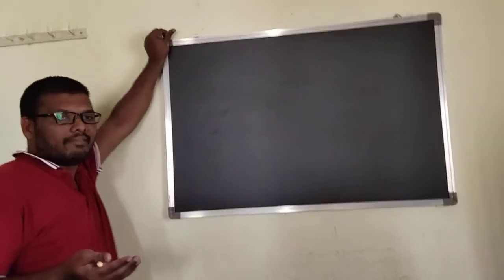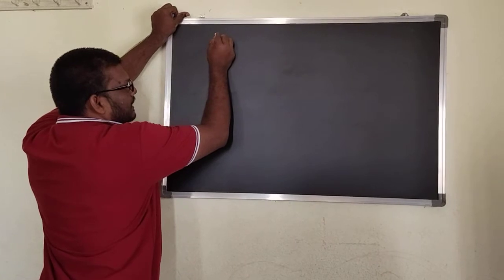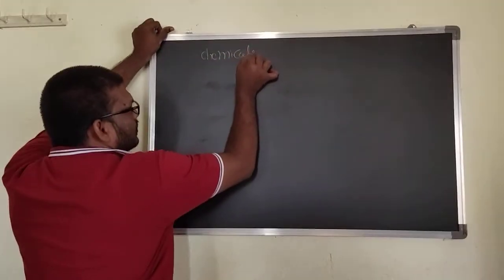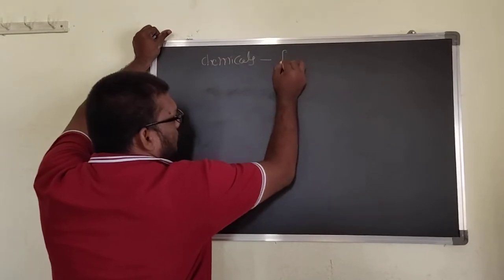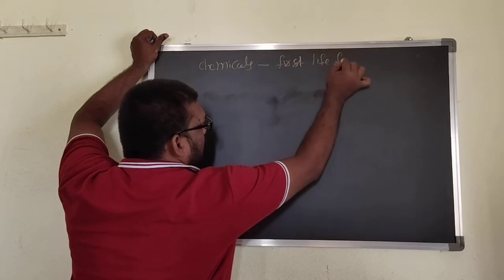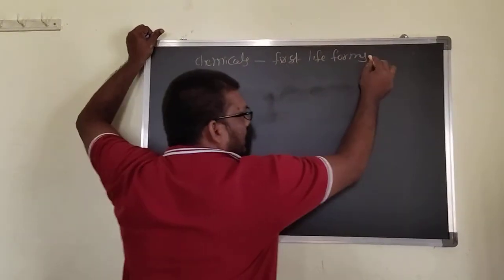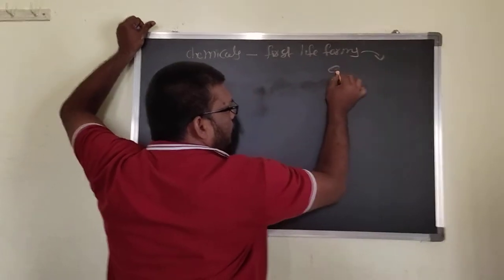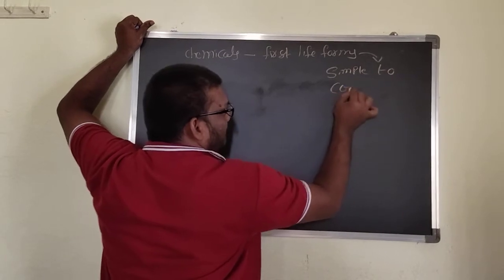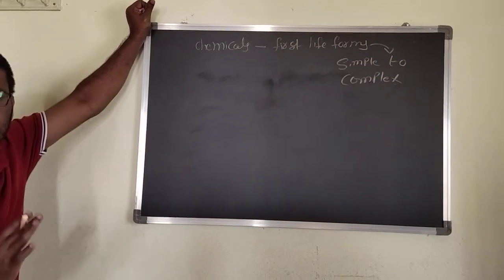Biological evolution came from chemical evolution. It means, from the chemicals the first life form is formed; later it can undergo division from simple form to the present complex form of organisms.